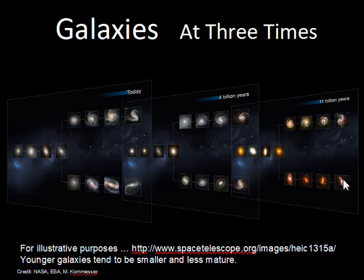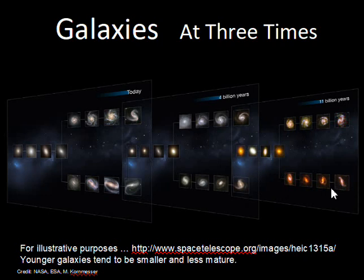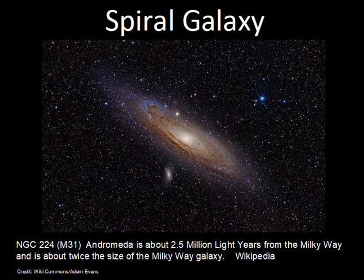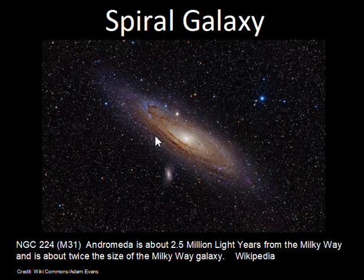In the early universe, all the types of galaxies were present; however, the barred spirals were less common in the early universe than they are today, and the ellipticals were also less common. The Andromeda galaxy, near the Milky Way, is larger than the Milky Way but is a spiral type of galaxy.